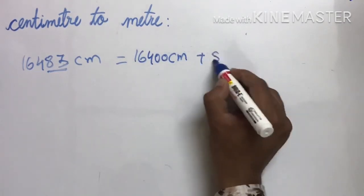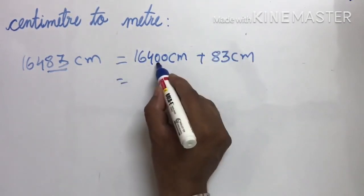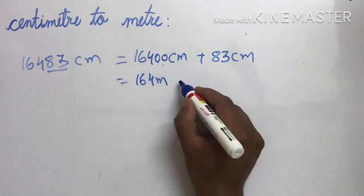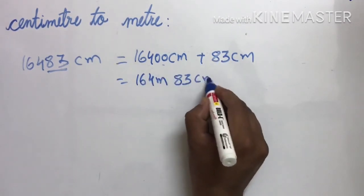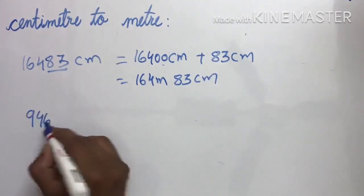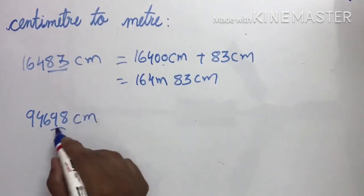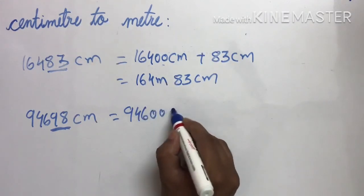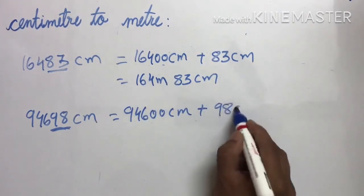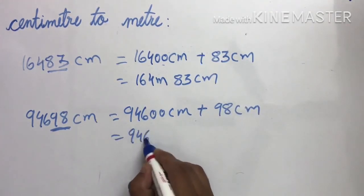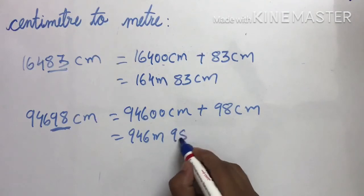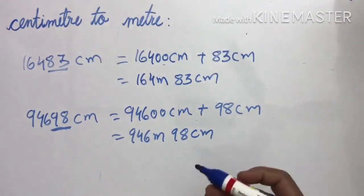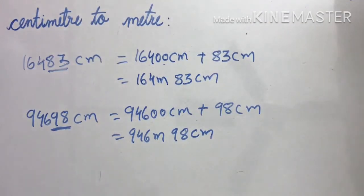16,400 cm plus 83 cm. अगर मैं यहां से पीछे के दो हटा दूं तो वो meter में change होगा — 164 meter और 83 cm. Understood? Centimeter — पीछे के दो digit 0 कर देना है। 94,600 cm plus 98 cm — यह कितने meter होगा? 946 meter और 98 cm. हमें last के सिर्फ दो digit को zero करना है and then वो meter में change हो जाएगा. Understood?